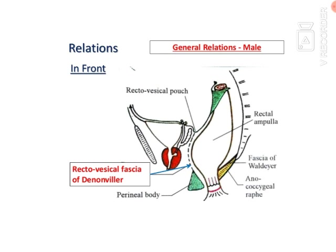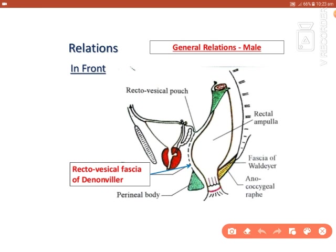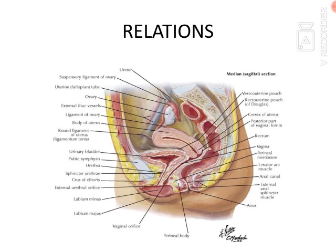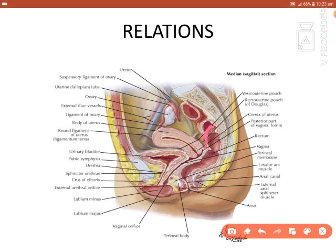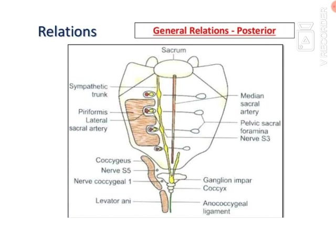To summarize the visceral anterior relations: in males — urinary bladder, seminal vesicles, prostate, and ureter, with the peritoneal reflection forming the recto-vesical pouch. In females — uterus (body and cervix), vagina, bladder, and urethra, with the peritoneal reflection forming the recto-uterine pouch.